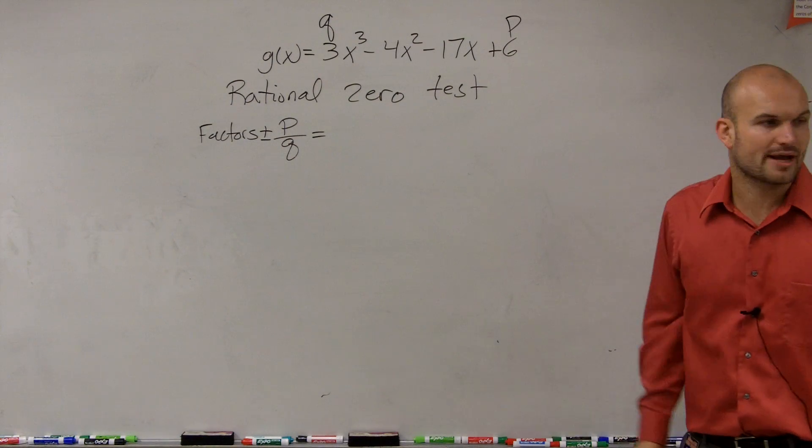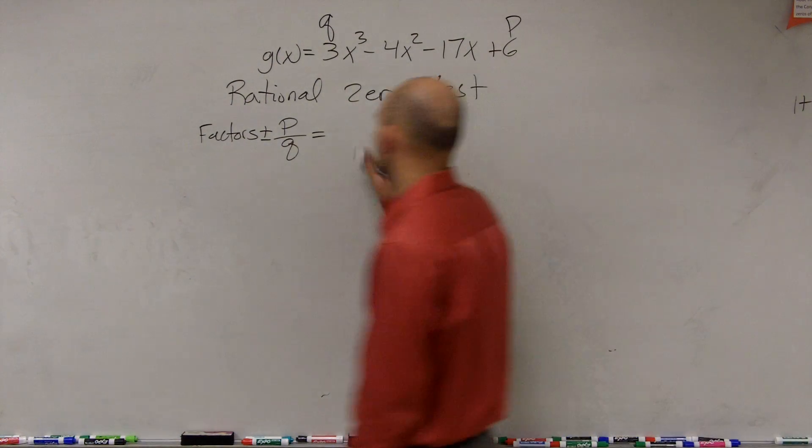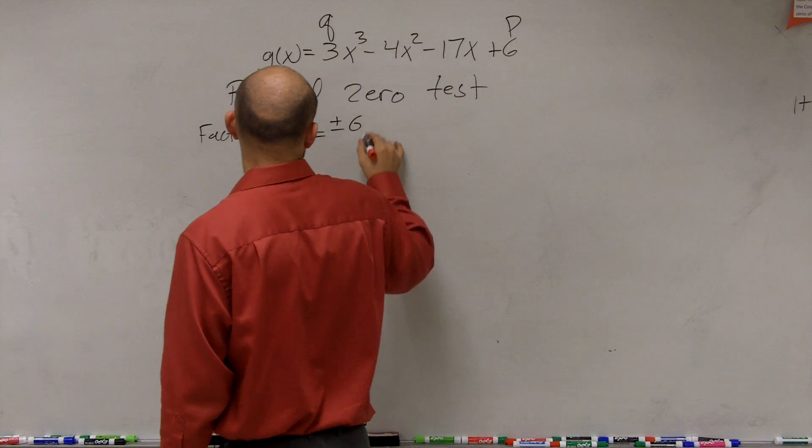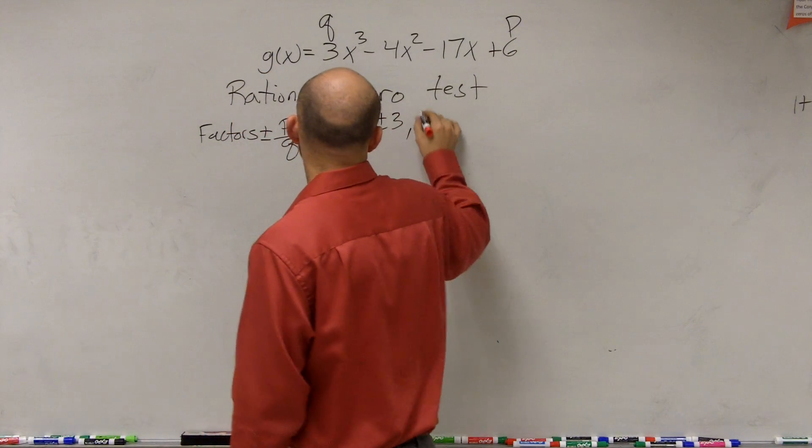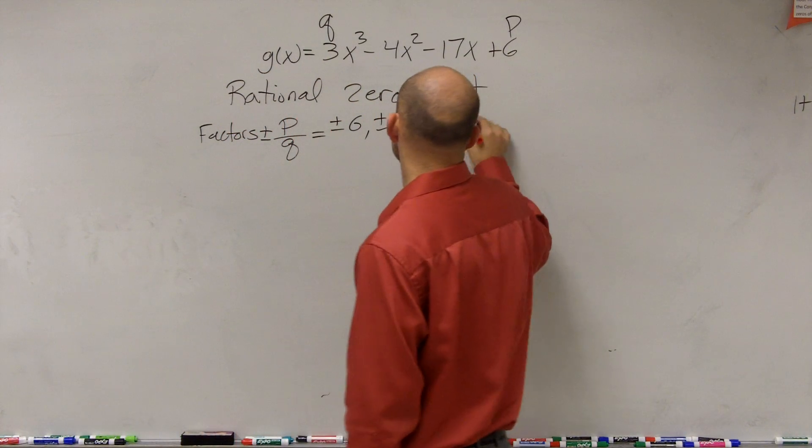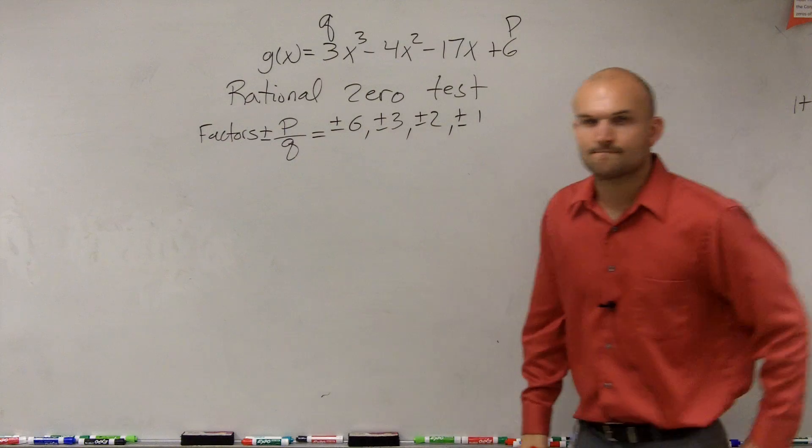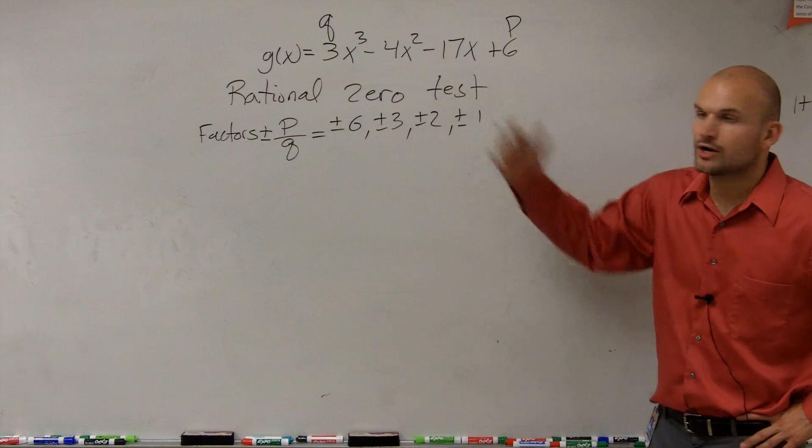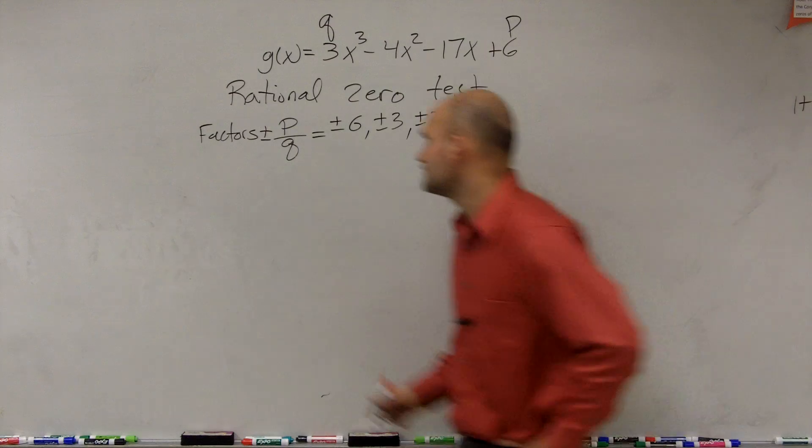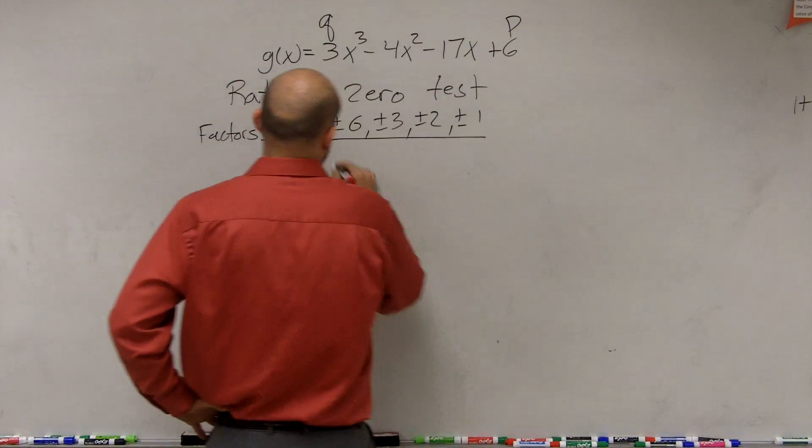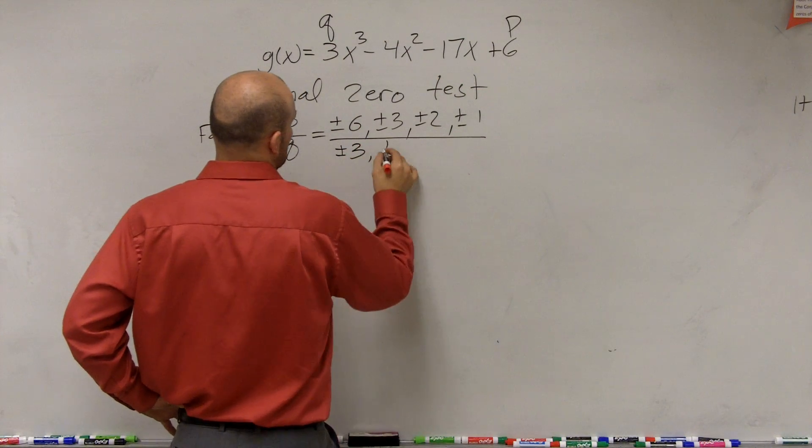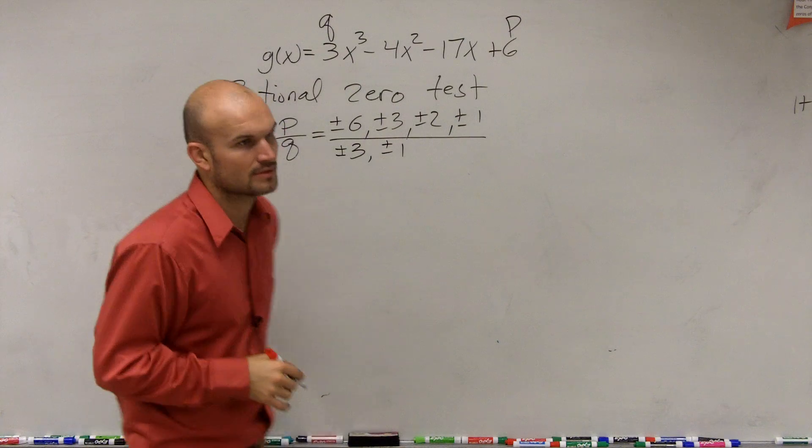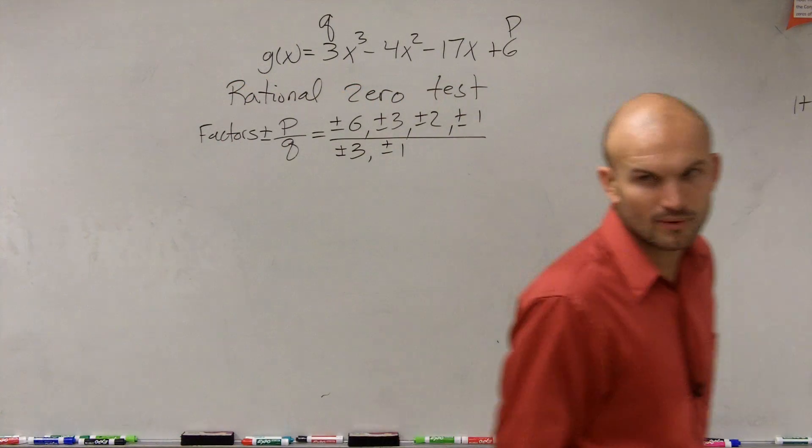Alright, so now let's go and take a look at what are all the factors of 6. So we have plus or minus 6, plus or minus 3, plus or minus 2, and plus or minus 1. Right? Then what are all the possible factors of 3? Well, plus or minus 3, plus or minus 1. Does everybody kind of see what I did there?